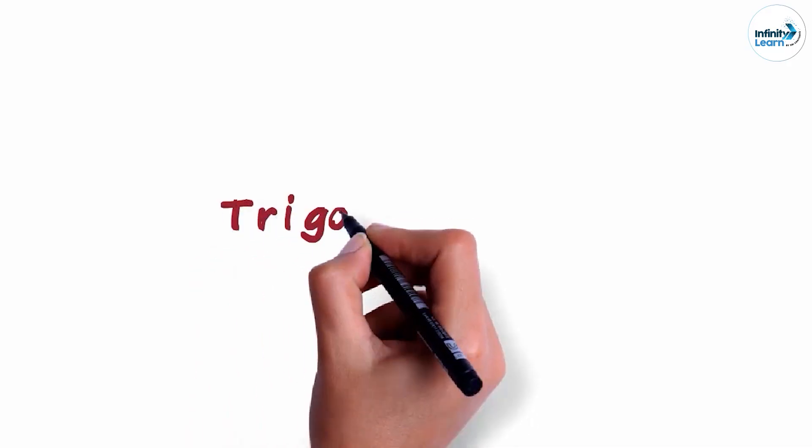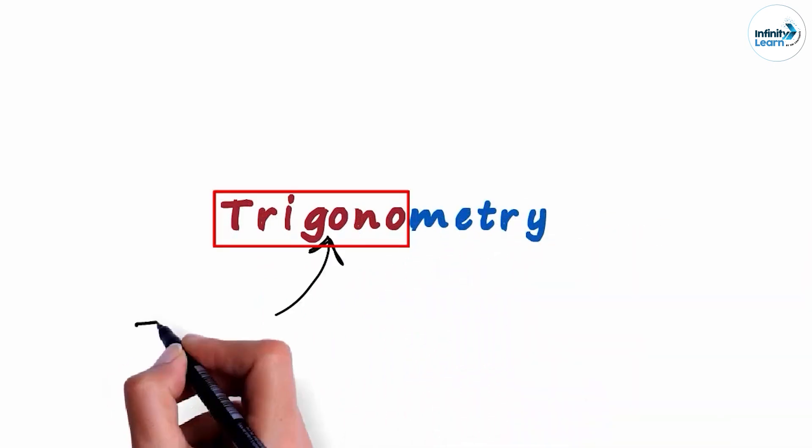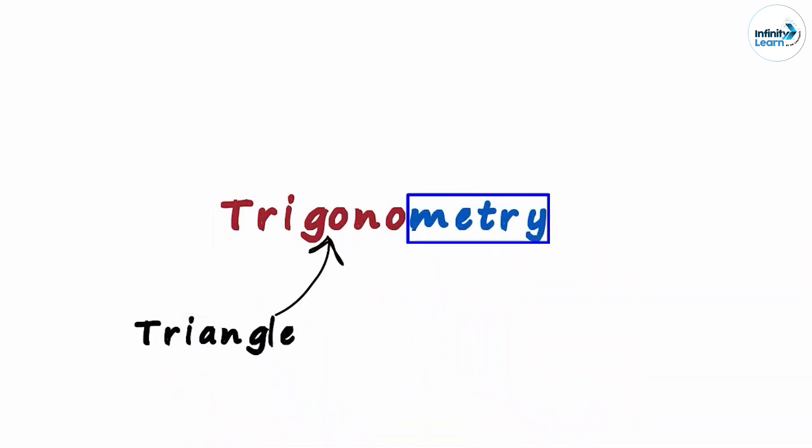What does Trigonometry actually mean? In Greek, this red part means triangle and the blue part means measure.